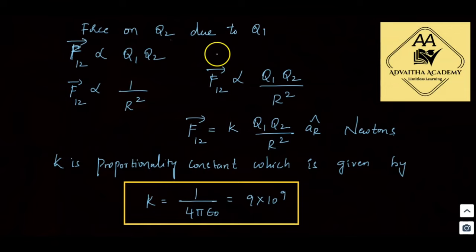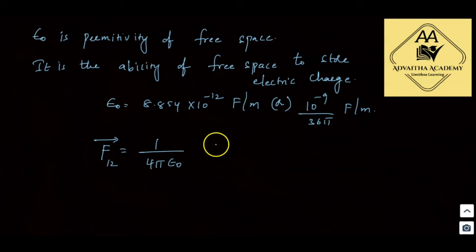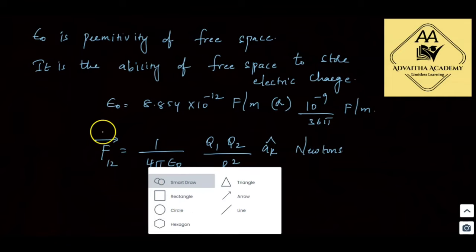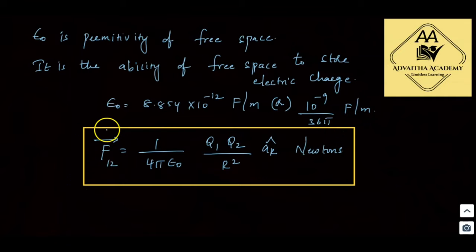F12-bar is the force on q2 due to q1. Substituting k = 1/(4πε₀): F12-bar = [1/(4πε₀)] · q1·q2 / r² · a-r12 cap, in newtons. This is the final formula to calculate the force between two charges using Coulomb's law.